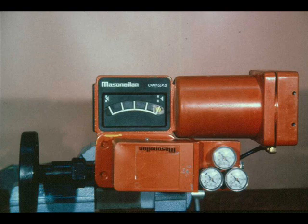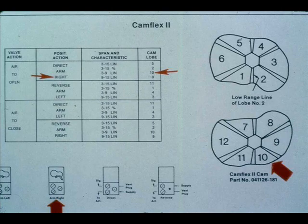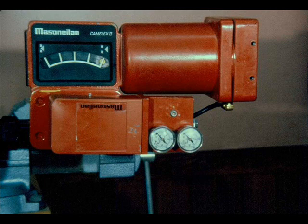The next example of calibrating the 4600 positioner will be on an air-to-close Camflex 2 valve. The positioner will be split ranged, reverse acting, and will give the valve a linear characteristic with 3 to 9 PSIG input. According to the instruction manual, the lever arm will be mounted on the right side and CAM lobe 10 will be used. The supply and exhaust have to be interchanged. Because the supply and exhaust have been interchanged, the supply gauge does not measure the supply pressure and must be removed and plugged to keep from confusing others.